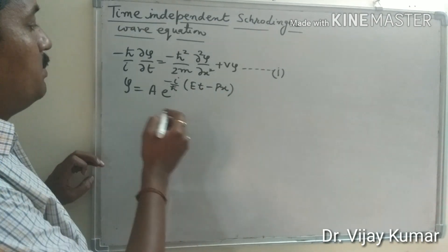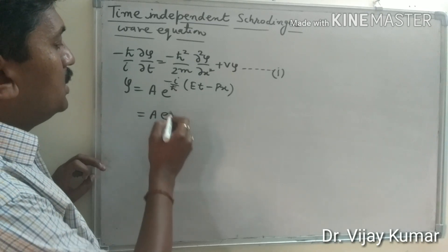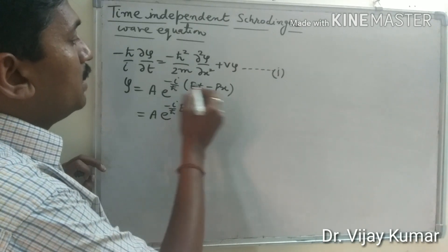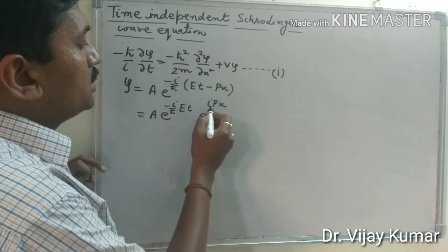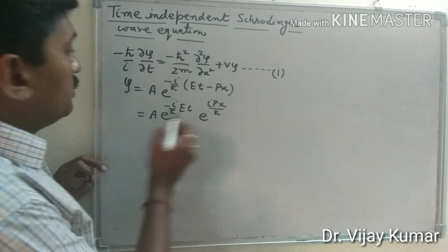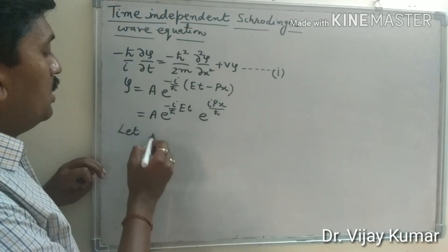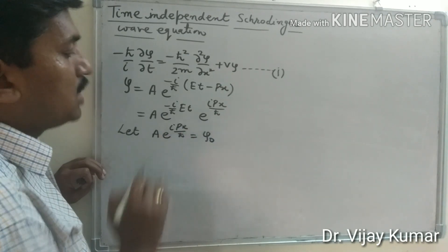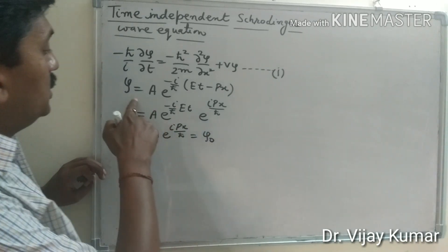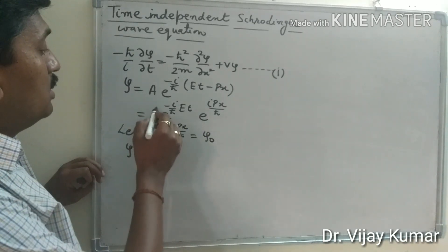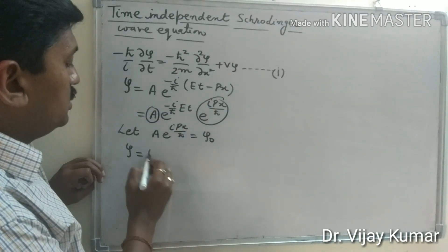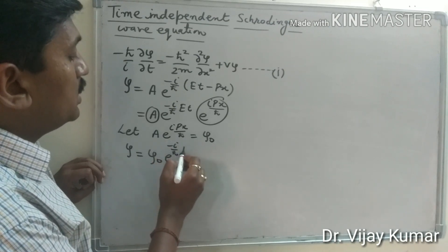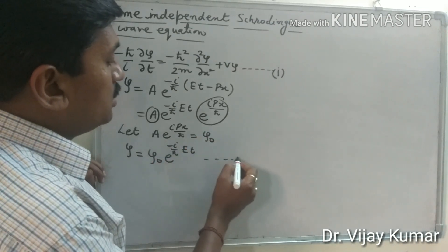We separate this wave function: A e to the power minus i upon h-cross Et, multiplied by e to the power i p x upon h-cross. Suppose A e to the power i p x upon h-cross is psi-naught. Then this equation becomes psi equals psi-naught e to the power minus i upon h-cross Et. This is equation number 2.